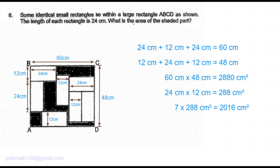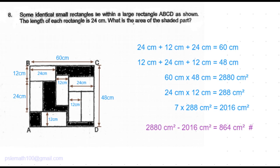So the difference between the area of the larger rectangle and the sum of the areas of the seven smaller rectangles is 864 centimeters square. That is the area of the shaded part — so that's the answer to this question.